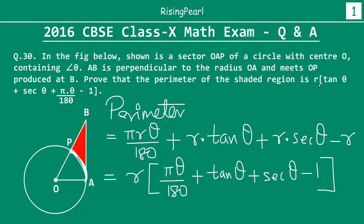So we have R as a common factor, multiplied by: tan θ — yes we have tan θ — plus sec θ, plus πθ/180, minus 1. Hence we have proved that the perimeter of the shaded region is indeed equal to R(tan θ + sec θ + πθ/180 − 1). This is how we solve question number 30.